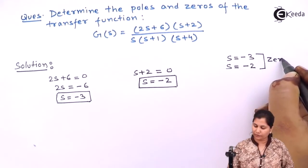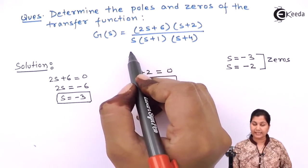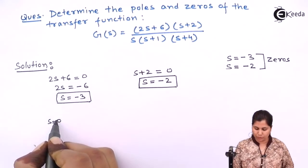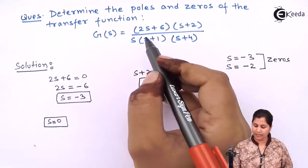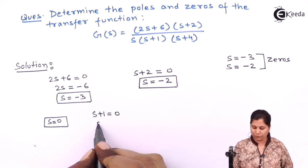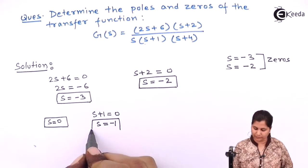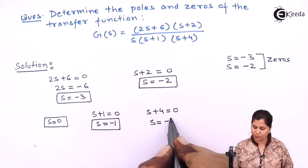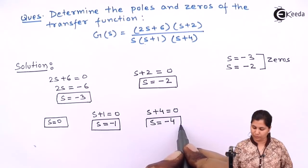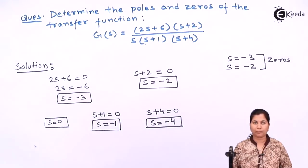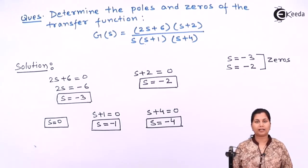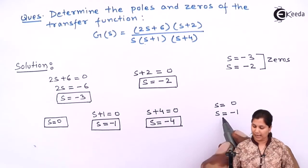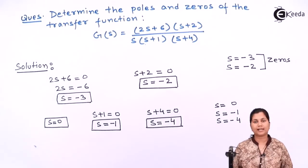Now let's find out the factors of the denominator polynomial. First, equating s to zero gives s = 0. Next, equating s + 1 to zero gives s = -1. Third, equating s + 4 to zero gives s = -4. These are the three factors of the denominator polynomial, and the factors of the denominator polynomial are the poles of the transfer function. So the poles are s = 0, s = -1, and s = -4.